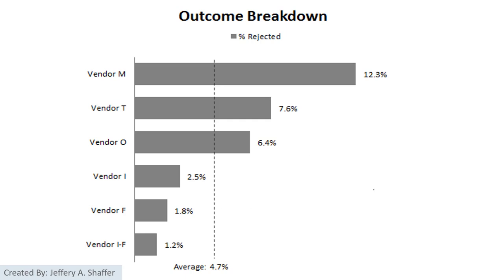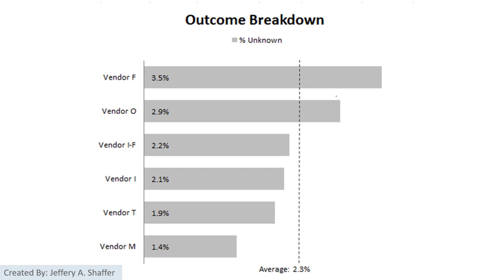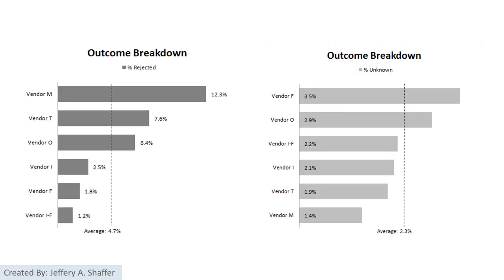Looking at just the rejection rate in a focused bar chart makes it even clearer. An 'all' category is added as a reference line showing the average rejection rate. Similarly, another bar chart is created just for unknown cases, again with the average reference line. Putting them together, we can see which vendors have the most rejections and the most unknowns.